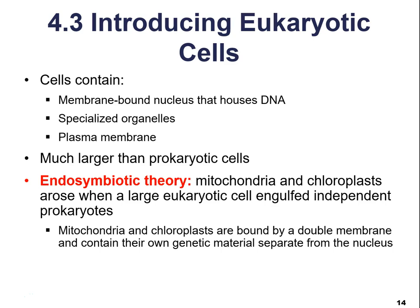Now moving to eukaryotic cells, which is the focus of most of the chapter. Eukaryotic cells have a membrane-bound nucleus; they are larger and more complex than prokaryotic cells; they have specialized organelles and a plasma membrane. There is also something called the endosymbiotic theory, which explains how eukaryotic cells came about and how they were derived.